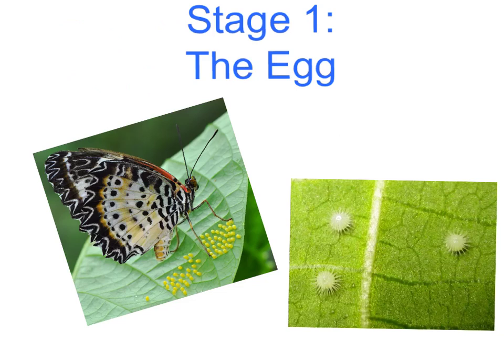Stage 1: The Egg. The first stage of the butterfly life cycle is the egg. The adult butterfly lays her eggs on a leaf or branch where they will be safe. As you can see, butterfly eggs can look very different — it all depends on the type of butterfly.